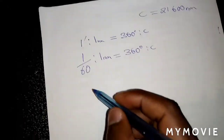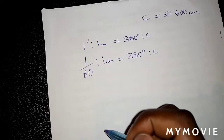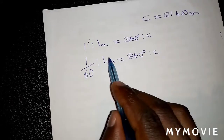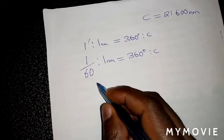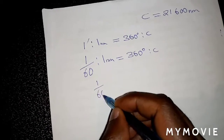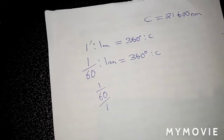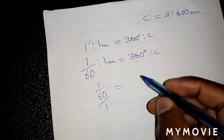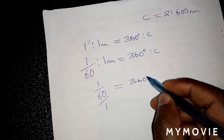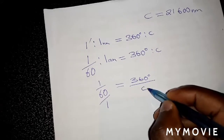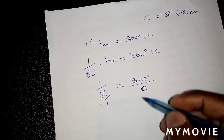This expression here can also be denoted or represented as 1 over 60 over 1, which is equal to 360 degrees over C, where C is standing for circumference.